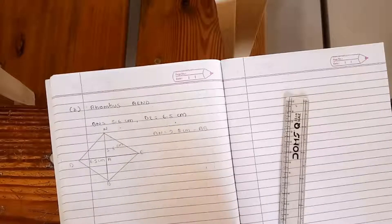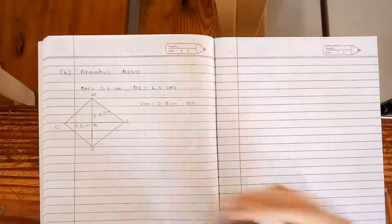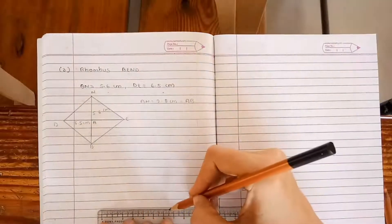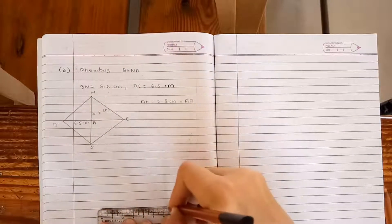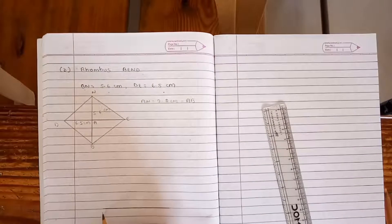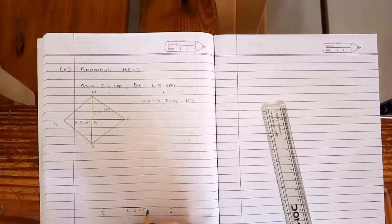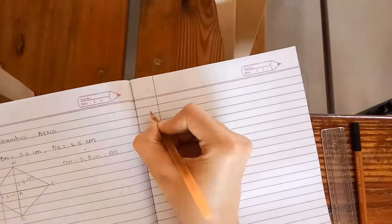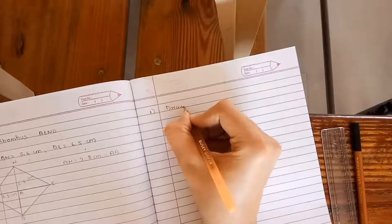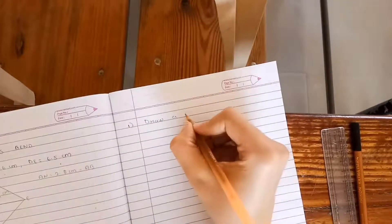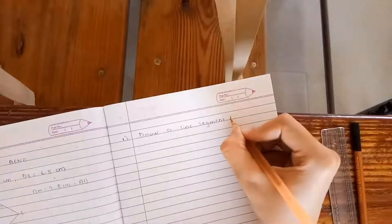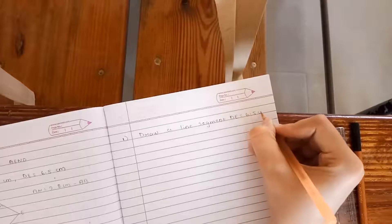Let us start. First of all we will draw a line segment 6.5 cm. B, E will be 6.5 cm. First point, draw a line segment B, E, is equal to 6.5 cm.